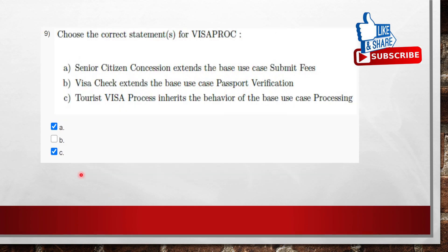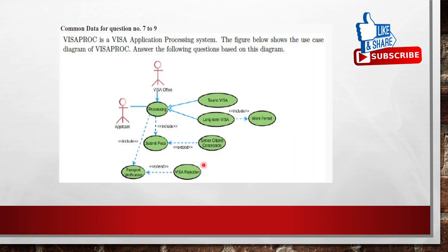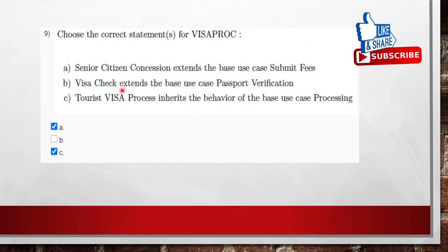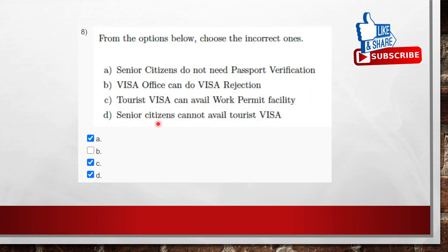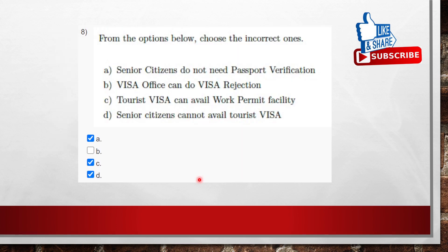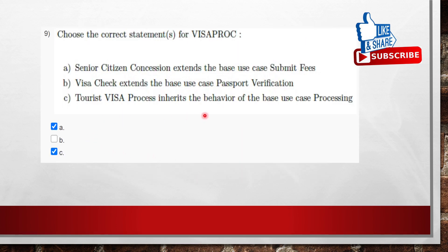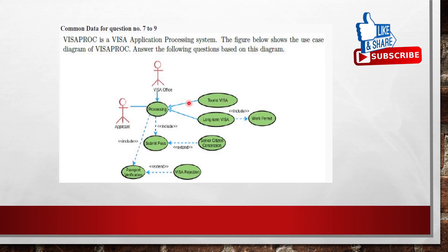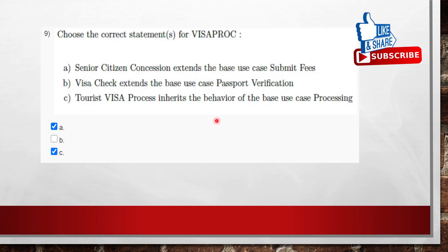Question 9: choose the correct statement for Visa Process. Option: senior citizen concession extends the base use case 'submit fees' — from the figure it is clear that senior citizen concession is extended from the submit fees use case, so this is true. Option: visa check extends the base use case 'passport verification' — visa check is not present in the diagram, so this is false. Option: tourist visa process inherits the behavior of the base use case 'processing' — from the figure, processing is the base use case and this is true. So the answers are A and C.